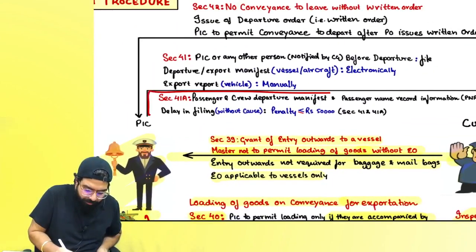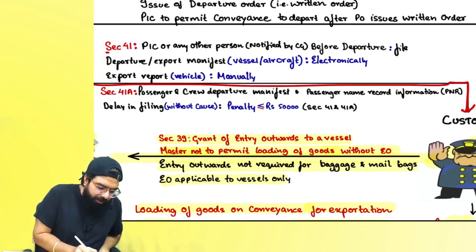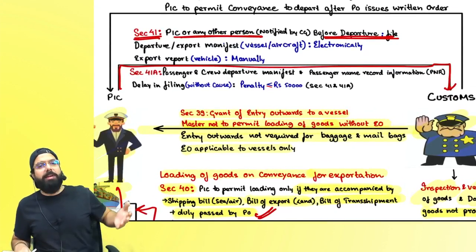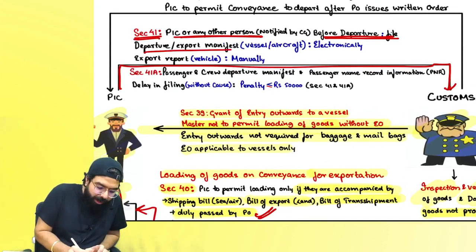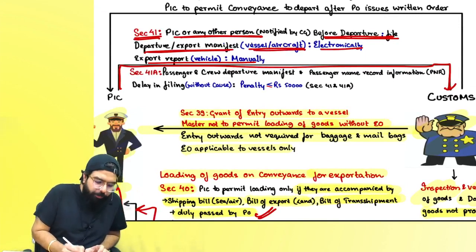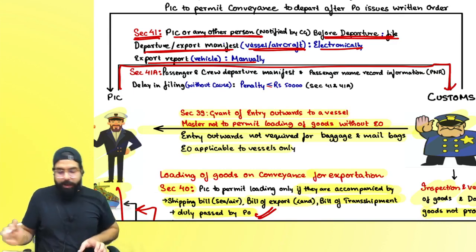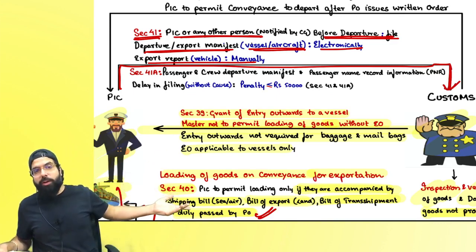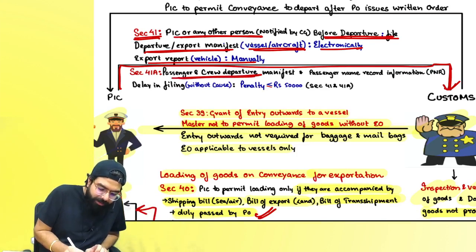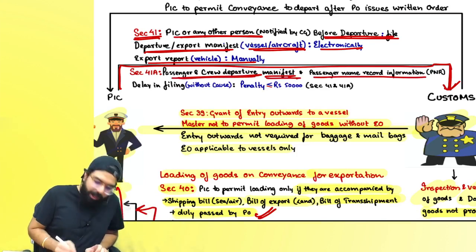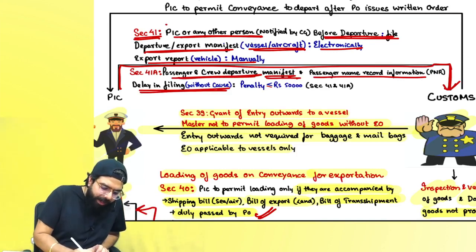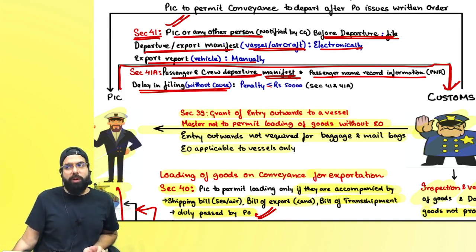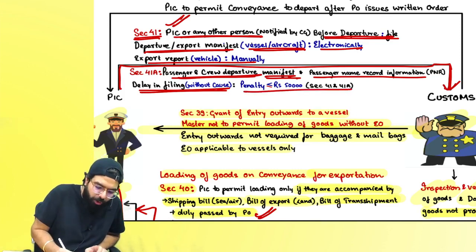Section 41 says the person in charge or his agent must, before departure, file a departure or export manifest in case of vessel or aircraft electronically, and an export report in case of vehicle (filed manually). They must also file a passenger and crew departure manifest and passenger name record information. Delay in filing the departure manifest, export manifest, or passenger and crew departure manifest without cause will lead to a penalty of up to ₹50,000.